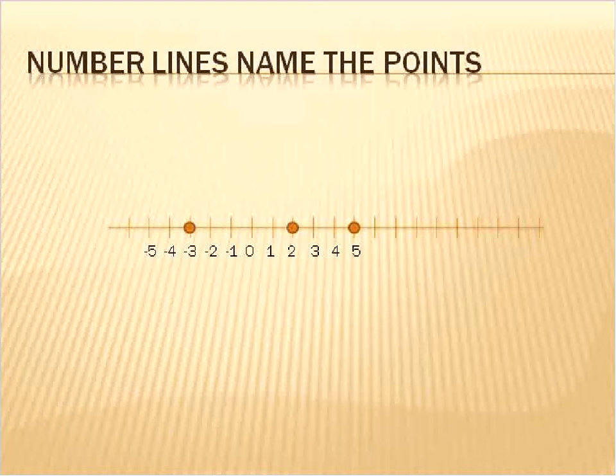Number lines work like this. You've got a line with numbers on it. Each of these upright lines represents a number.